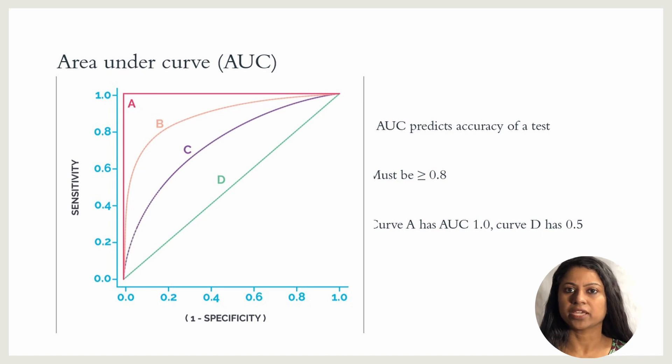The maximum value for AUC is 1, indicating a theoretically perfect test with 100% sensitivity and 100% specificity. In the figure, the graph shown by D has an AUC of 0.5, which means that test has a sensitivity and specificity of 50%, which is no better than getting the test results by chance.